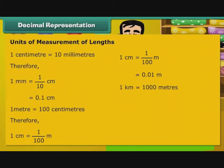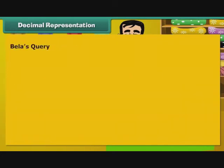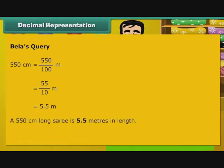1 km is equal to 1000 m. Therefore, 1 m is equal to 1 by 1000 km, that is equal to 0.001 km. Now, let us turn our attention to Bela's question. 550 cm is equal to 550 by 100 m, that is equal to 55 by 10 m, that is equal to 5.5 m. A 550 cm long saree is 5.5 m in length.